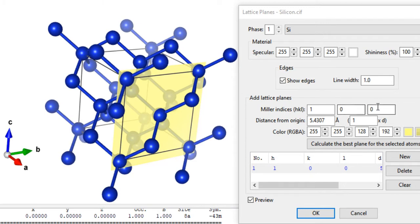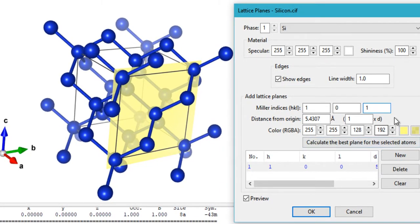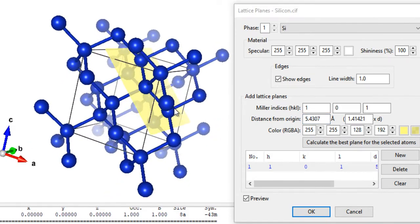In order to visualize the 101 plane, just enter 1 right here and click Enter. Now you can see it is visualizing the 101 plane.